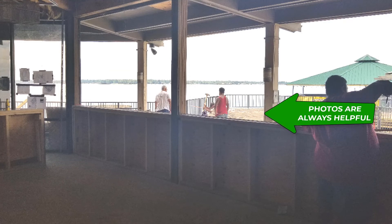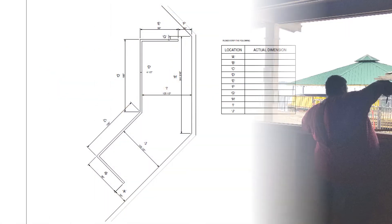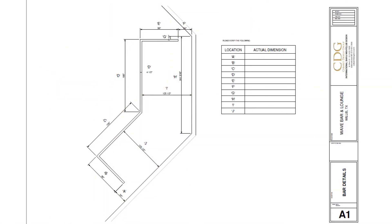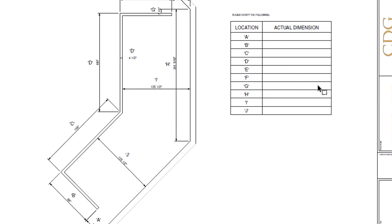In situations such as these, I generally prepared my own sketch, as shown here, and requested that the owner's general contractor confirm the measurements that I labeled A, B, C, D, and so forth. The next day, the general contractor sent me an email with the information I needed, and I was on my way.